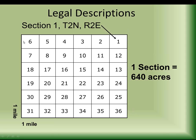Each section is 640 acres. So the township is six miles by six miles; within a township there are 36 sections, and each section is one mile by one mile, or 640 acres.